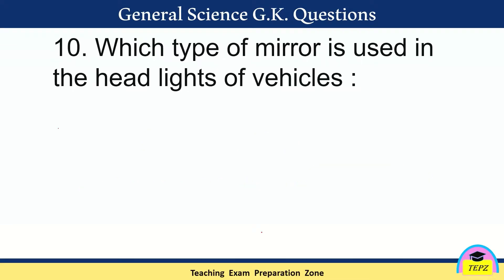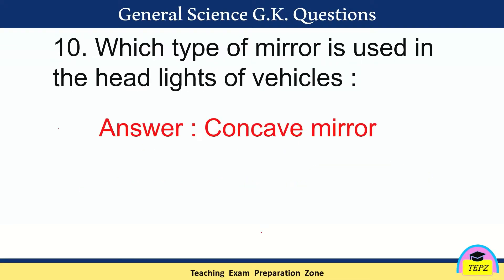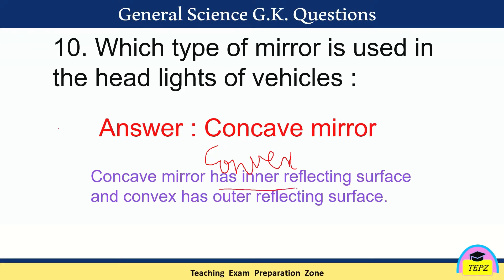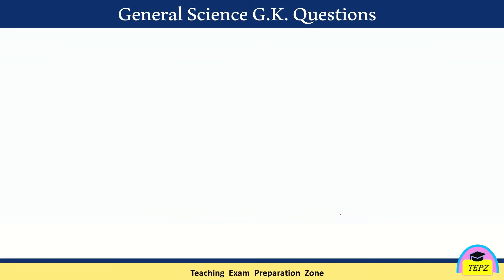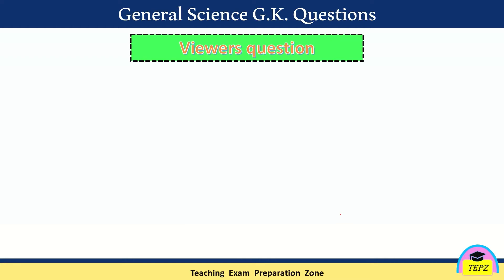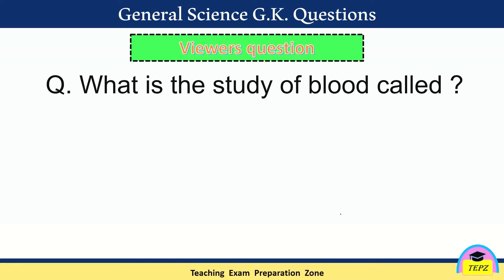Which type of mirror is used in the headlights of vehicles? The answer is concave mirror. There are two types of spherical mirrors: concave and convex. A concave mirror has an inner reflecting surface, while a convex mirror has an outer reflecting surface.